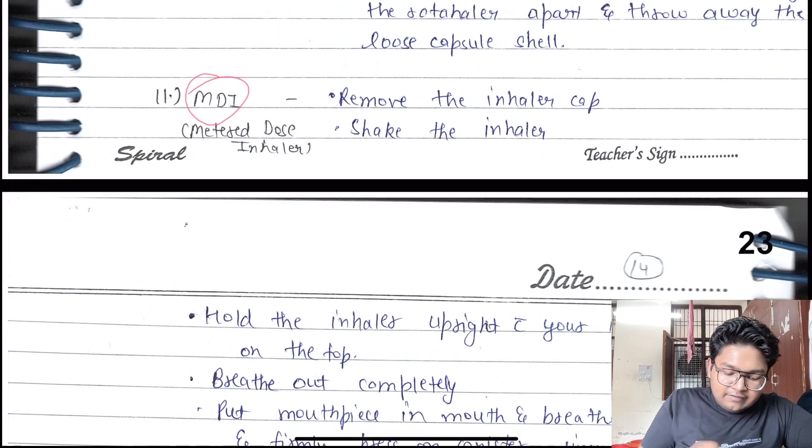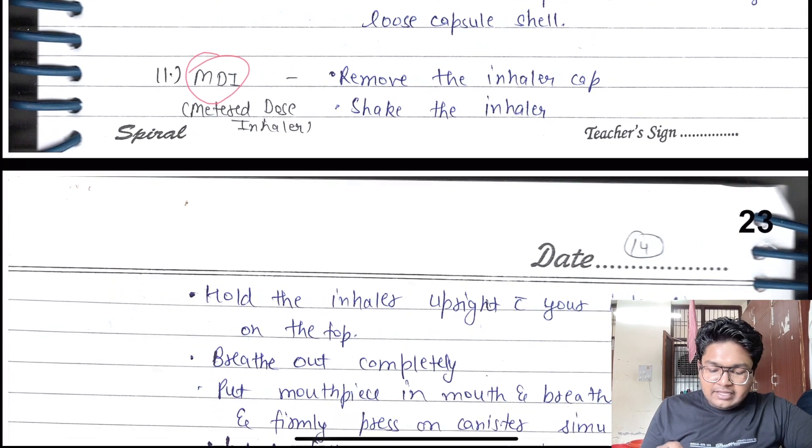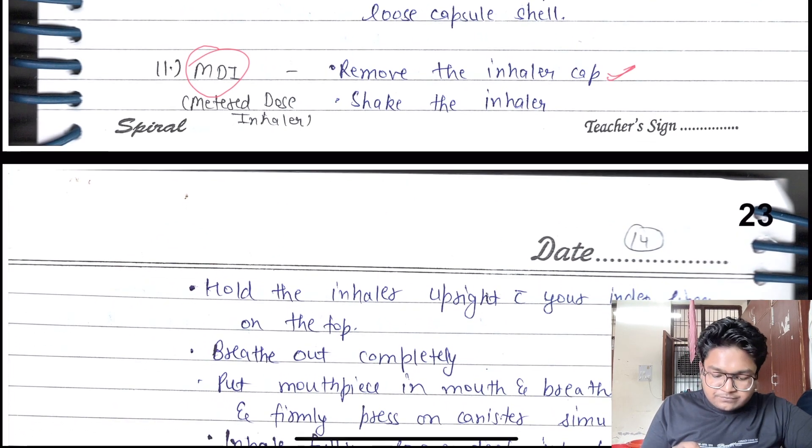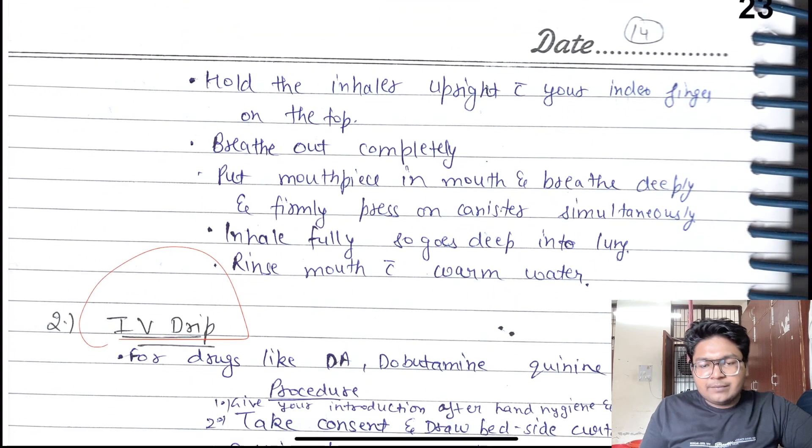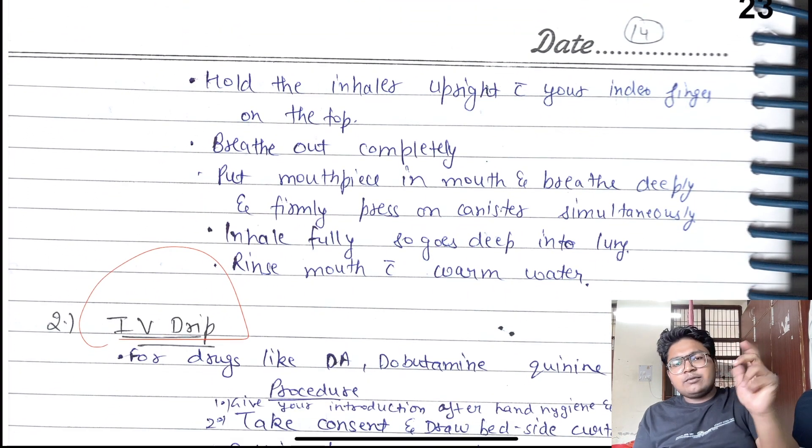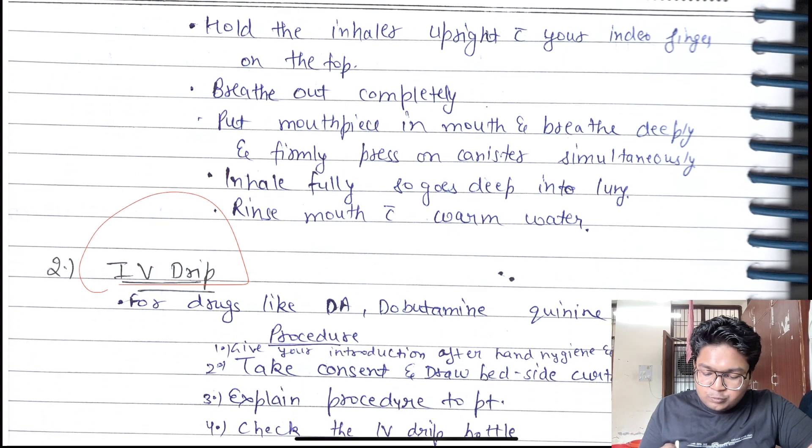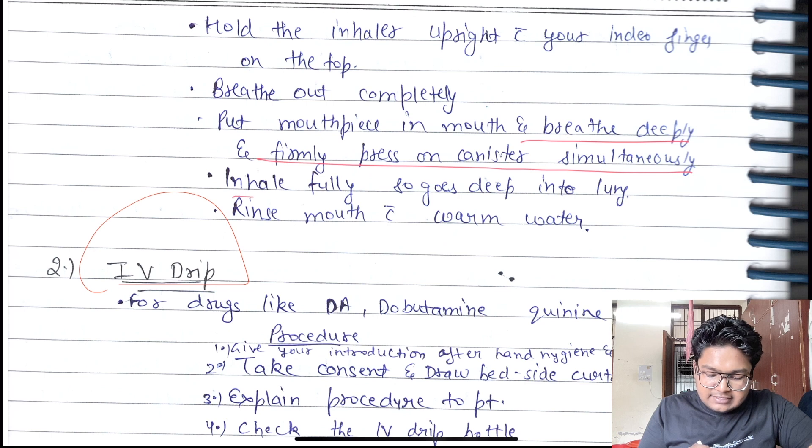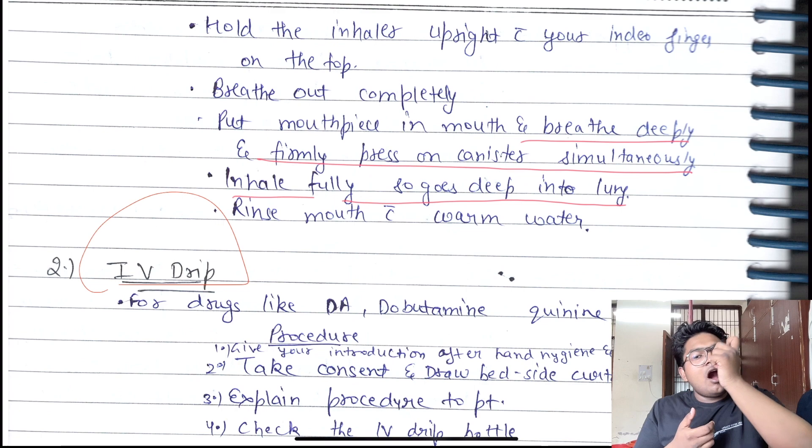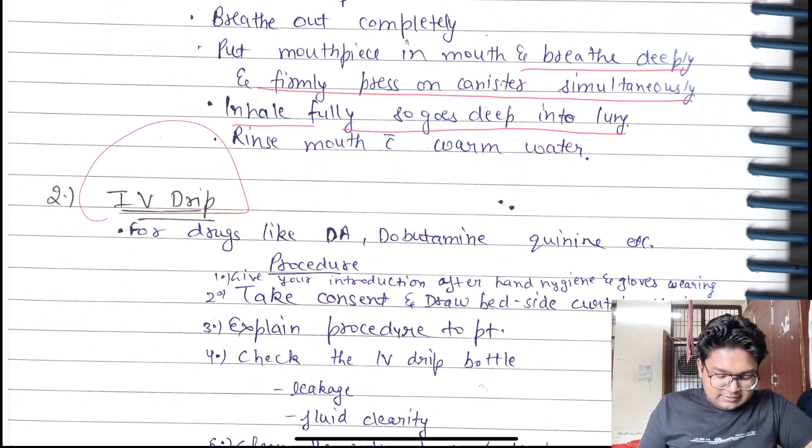Metered dose inhaler or MDI: remove the inhaler cap, shake the inhaler, hold the inhaler upright like this. Put the mouthpiece in and breathe deeply. Firmly press the canister simultaneously while you inhale fully. Go deep into the lungs - you have to press and inhale like this.